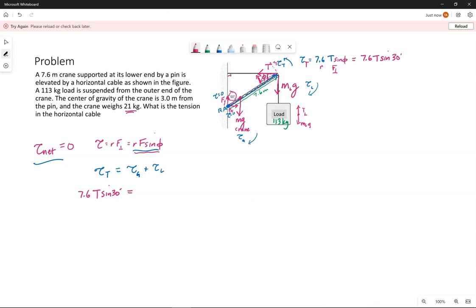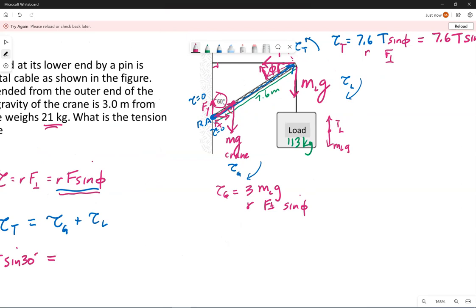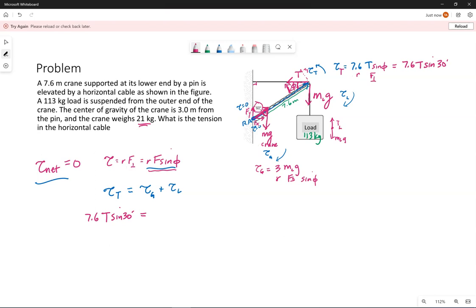We need the torque due to gravity of the crane itself, the weight of the crane, and the torque due to the load. So the torque due to gravity, R is that 3 meters. It's 3 meters from the pin up to that location where gravity is acting. The force is the mass of the crane times G. But again, we need the perpendicular component of the force. If we say R, F sine phi, phi in this case, let me zoom in. The phi in that case is right here. Because R is along the crane, F is straight down, the angle between those two is phi in terms of our equation for R, F sine phi.